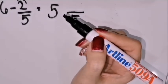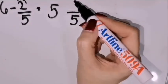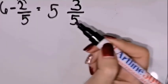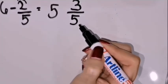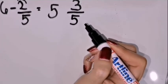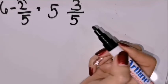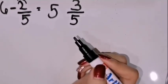So it's 5 minus 2, that's 3. The answer is 5 and 3 fifths.